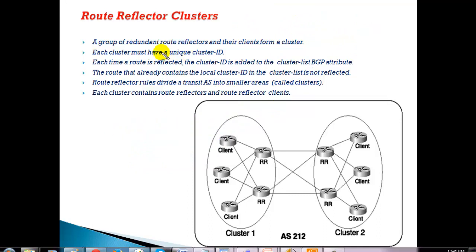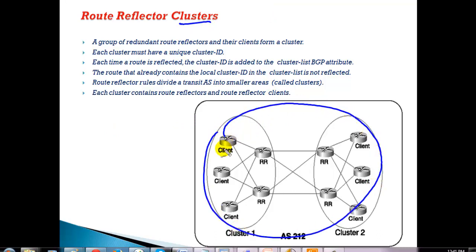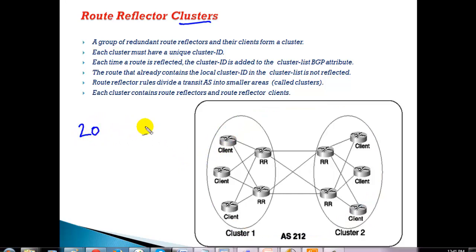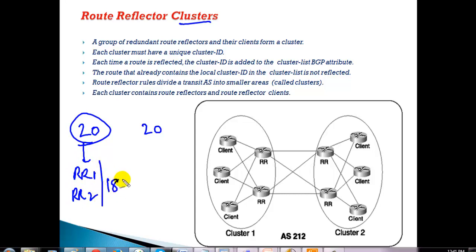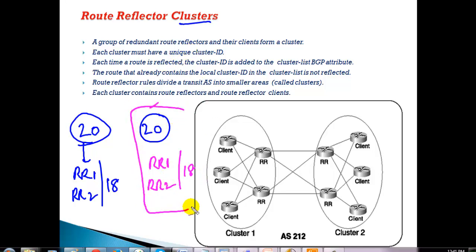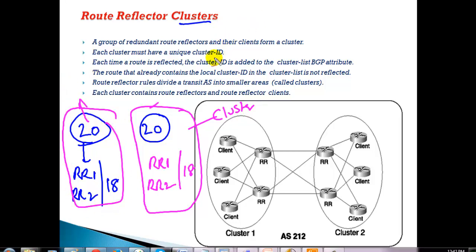To optimize, I can use clusters by dividing the 40-router autonomous system into two groups of 20 routers. In each group of 20, I make two RR servers and the remaining 18 are clients. This first part is referred to as one cluster and the other part as another cluster. Any update received from a client is forwarded to the server, and the server updates the remaining clients. If one server goes down, routes can still be exchanged within the cluster.